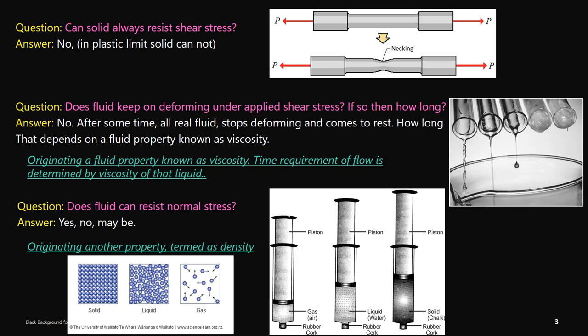Another question: does a fluid keep on deforming under applied shear stress, and if so, for how long? We said that no matter how small the shear stress, there will be continuous deformation — there is a time history at T1, T2, T3. But does this go to infinity or does it stop after some time? In a real fluid, it does not deform continuously forever — after some time it comes back to a stationary state. But for an ideal fluid, continuous deformation is seen even at T equal to infinity. All real-life fluids are not ideal, and deformation actually stops after some time.